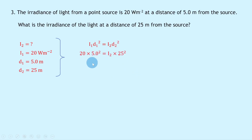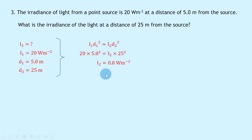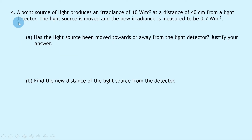Writing down the equation: I₁d₁² = I₂d₂². Substituting gives 20 × 5.0² = I₂ × 25². The left-hand side is 20 × 25. Dividing both sides by 25² to isolate I₂ gives I₂ = 0.8 watts per square meter.